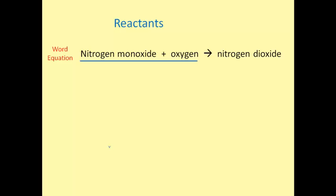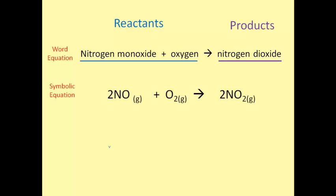Nitrogen monoxide and oxygen are the reactants, and nitrogen dioxide is the product. This word equation can also be written as a symbolic equation: 2NO plus O2 produces 2NO2. 2NO and O2 are the reactants, and 2NO2 is the product.